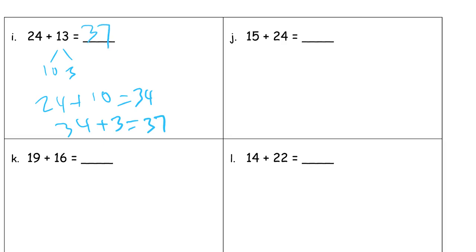15 plus 24. Split up the smaller number. 24 plus 5, seeing the 4 and the 5, that's 29. And then just add 10, 29 plus 10 is 39.